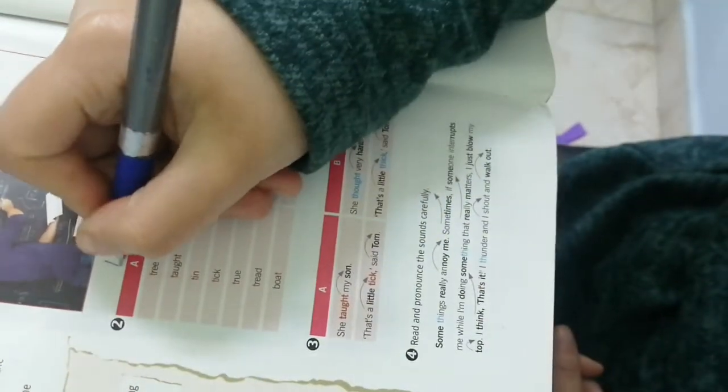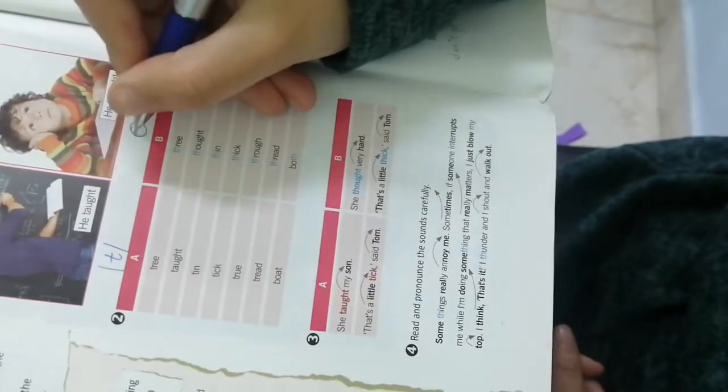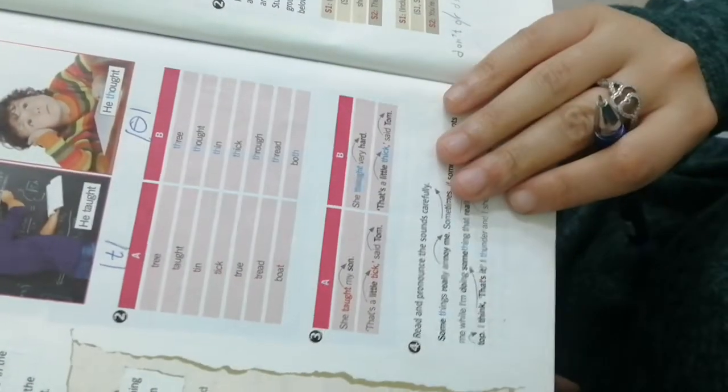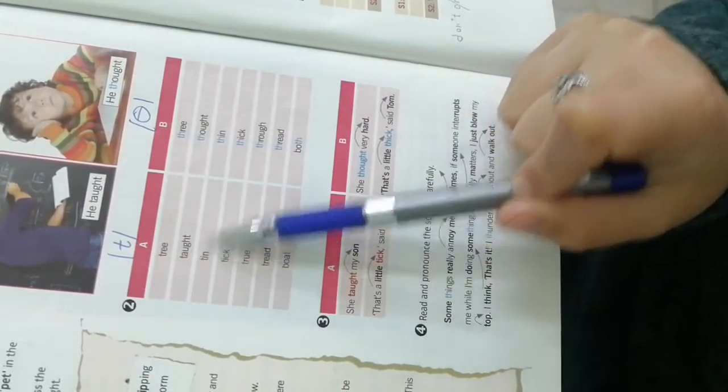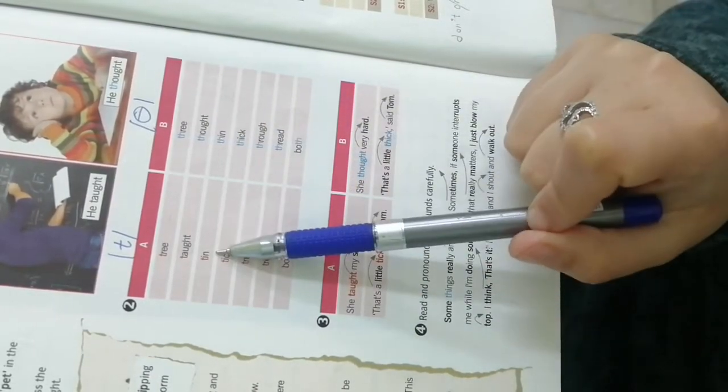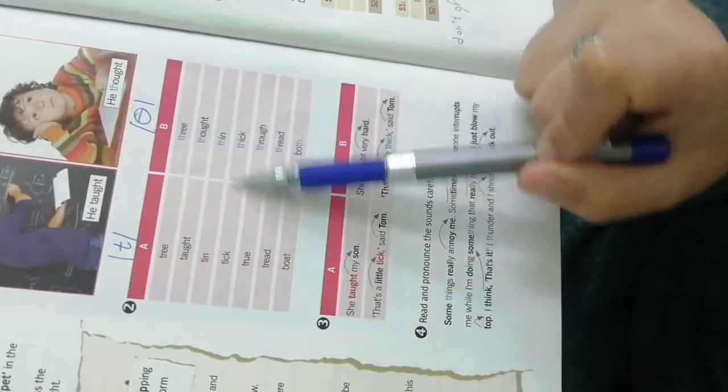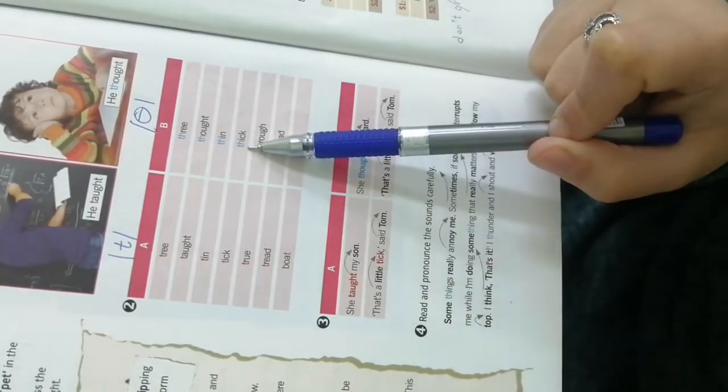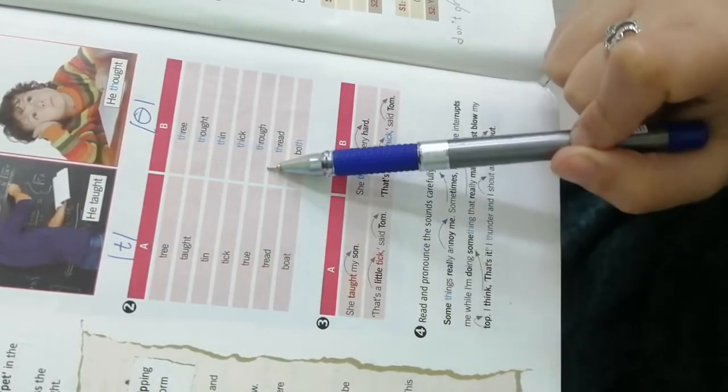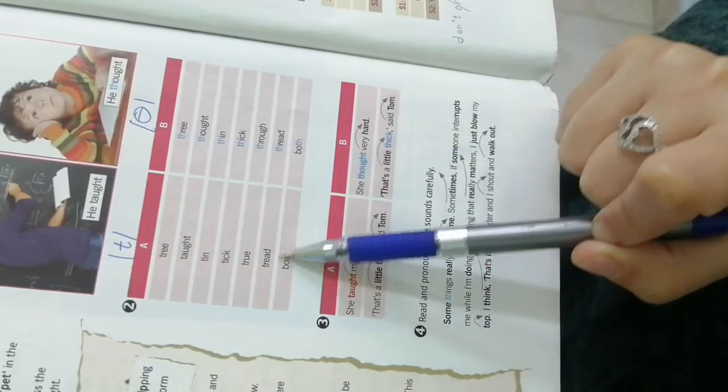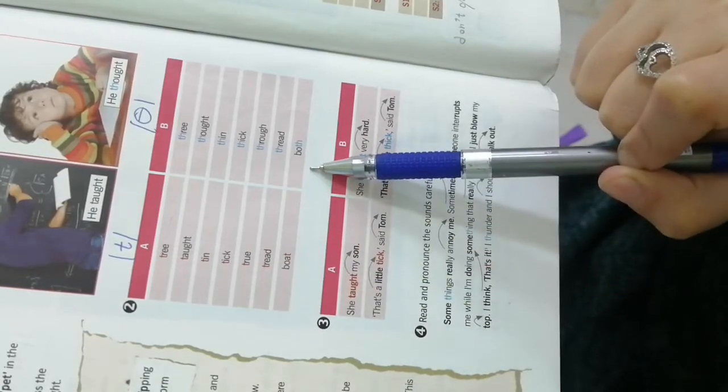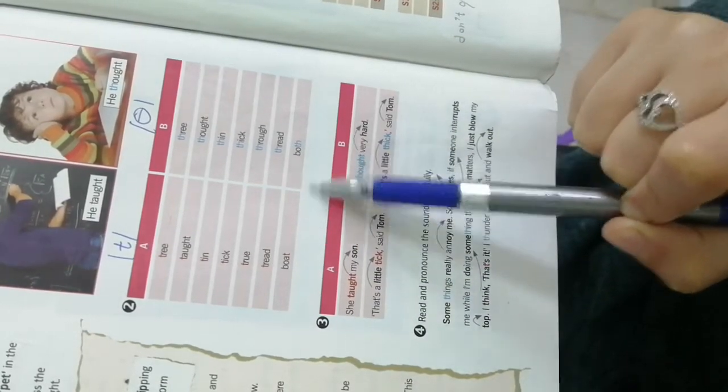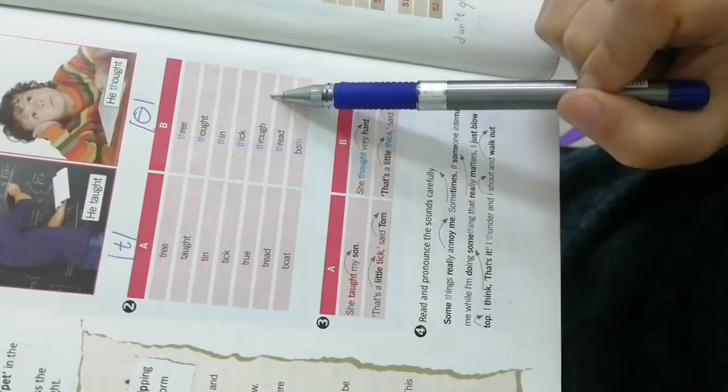ها سنينجي لقسم، هون عندي ال-t وهون أنا عندي ال-th. tree, three, taught, thought, ten, then, tick, thick, throw, through, thread, thread, a pot, a poth. معناته عندي ال-t بال-th.